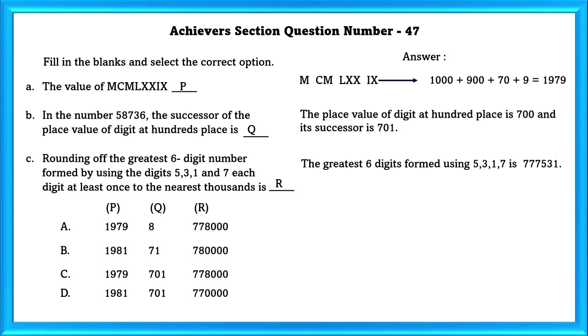The greatest 6 digit formed using 5, 3, 1, 7 is 7,77,531. And rounding off, we get 7,78,000. That leads us to the C option, which is our answer.